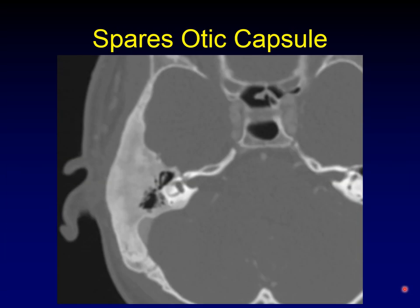Another famous feature of fibrous dysplasia is how it spares the otic capsule. You often get fibrous dysplasia of the temporal bone, but it stops dead right when it hits the otic capsule. You can see fibrous dysplasia all the way around, collapsing the air cells of the middle ear and mastoid, and yet the inner ear is pristine — absolutely preserved, even coming out and around the posterior semicircular canal.